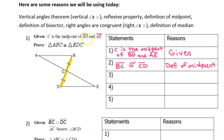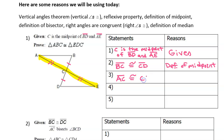But there were two segments in the given. So C is the midpoint of segment BD, but it's also the midpoint of segment AE. So here is segment AE. If C is the midpoint of that, then segment AC is congruent to segment CE. And again, that is the definition of midpoint.